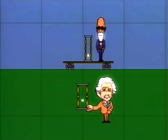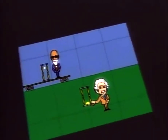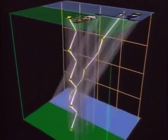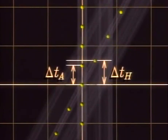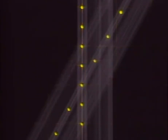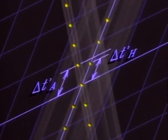And what about the mystery of the clocks? How can each think the other's clock is slow? On the space-time diagram, just follow the bouncing light beams. On Albert's time axis, Henry's ticks are farther apart than his own. But on Henry's time axis, Albert's ticks are farther apart — no matter how he looks at it.